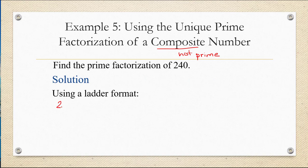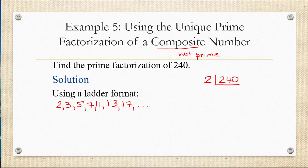First, you need to know your prime numbers — 2, 3, 5, 7, 11, 13, 17, and so on. Write down the first few prime numbers to keep them in mind, and then divide by the smallest one first. 240 is an even number, so it's divisible by 2. I'm going to write my division symbol upside down and write the answer on the bottom rather than the top, because it makes it easier to work through the problem. So 2 goes into 240 one hundred twenty times. Does 2 go into 120? Yes — 120 is an even number, so we're going to divide by 2 again. 2 goes into 120 sixty times. Does 2 go into 60? Yes, it does. So we're going to divide by 2 again, and keep doing that until we can't divide by 2 anymore.